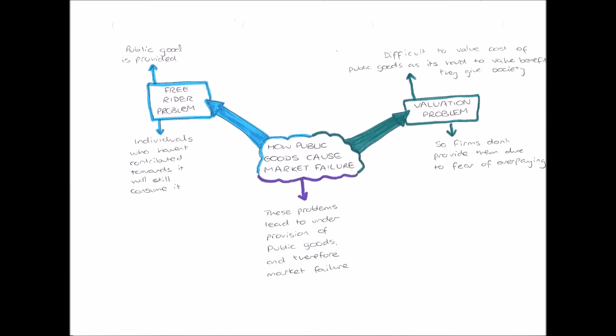Firstly, the free rider problem. Once a public good has been provided, it can be used by all. As we said with lamp posts, once one person uses it, it can be used by anybody else at the same time. Individuals who haven't contributed or paid for it can still use it. For example, if a company put up new lamp posts on my street and I decided not to pay towards them, I could still walk out and use those lamp posts every night, because no matter how many people consume them, they still give out light.